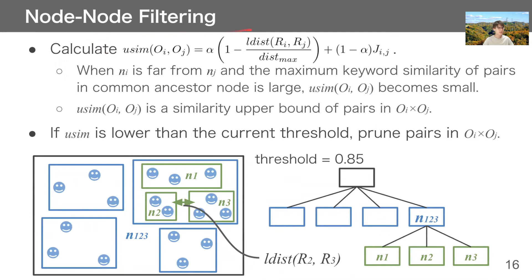Next, we introduce node-node filtering, which can prune all object pairs in two nodes. For given two nodes, NI and NJ, we calculate usim. As you can see, when NI is far from NJ, and the maximum keyword similarity of pairs in common ancestor node is large, usim becomes small. And we know that usim is a similarity upper bound of pairs in product of OI and OJ. Therefore, if usim is lower than the current threshold, we can prune pairs in this set.